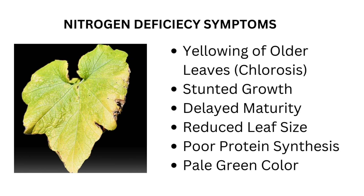Plants will always communicate to us when there is a deficiency of a particular nutrient. For instance, if there is a deficiency of nitrogen, one of the most common signs that you will see is the yellowing of the older leaves. This starts from the tips and spreads towards the base. This is because nitrogen is a mobile nutrient within the plant, and when it becomes deficient, the plant mobilizes nitrogen from older leaves to support the growth of newer leaves. In addition to yellowing of older leaves, you will also observe stunted growth, delayed maturity, reduced leaf size, and a pale green color indicating a lack of chlorophyll.